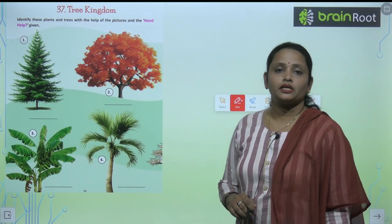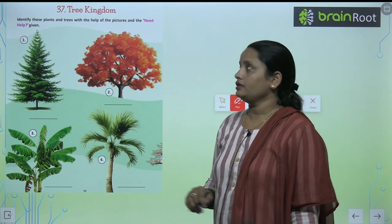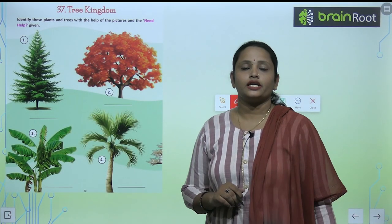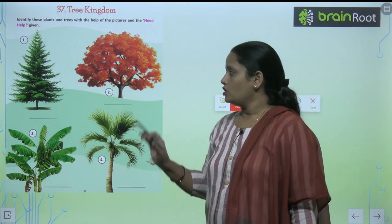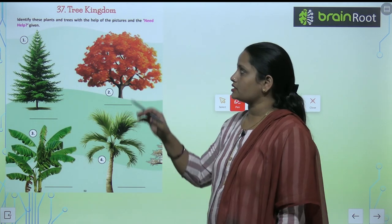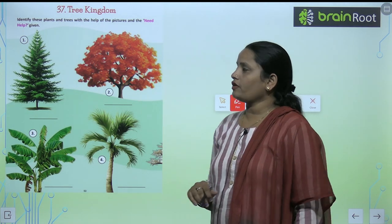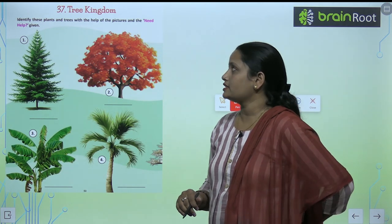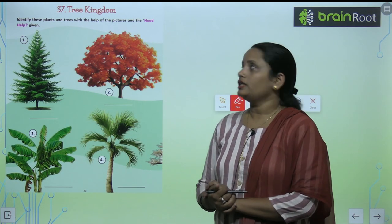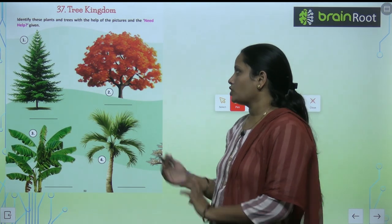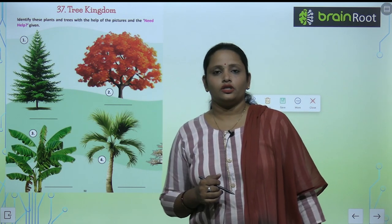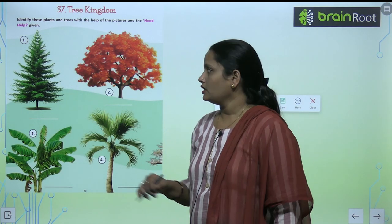So children, this is chapter number 37 and the name of the chapter is Tree Kingdom. Here we are going to learn about different trees. Identify these plants and trees with the help of the picture and the need help box. So we have a picture of plants and we have to identify them.